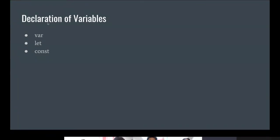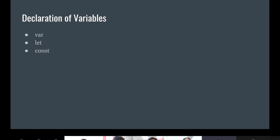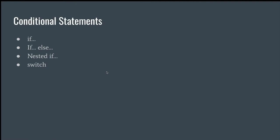To summarize the different types of declarations: var is a global variable — we can modify it and access it anywhere across the page, application, or script. let is a scope-level variable — we can modify and access it only within its scope. const can be defined globally, but we cannot modify it — we can use it anywhere, inside or outside a scope.